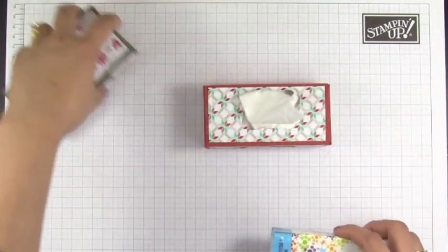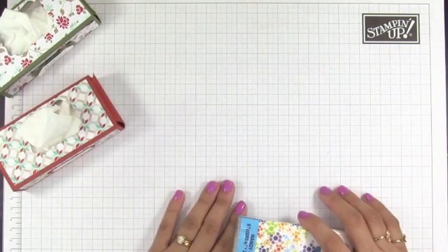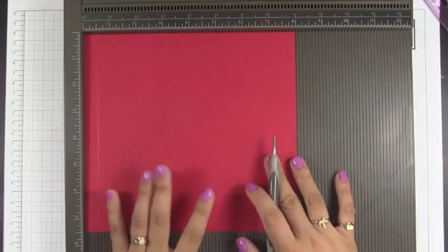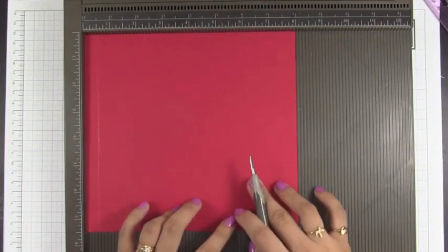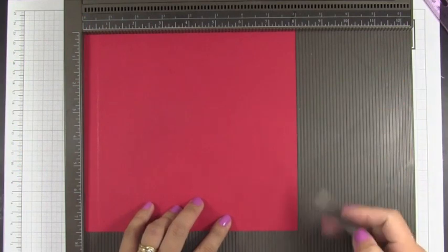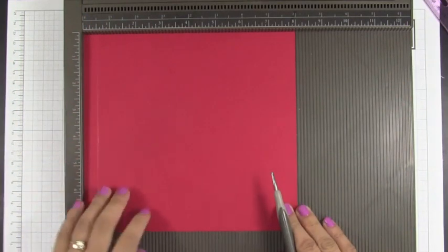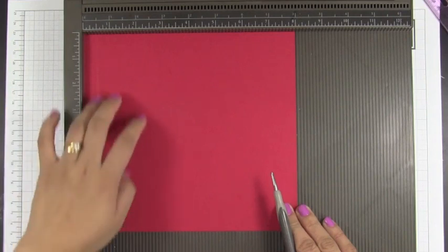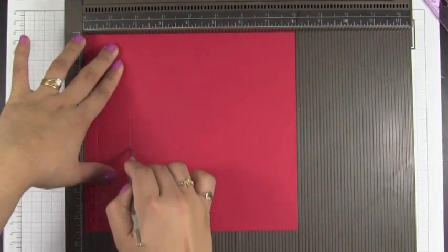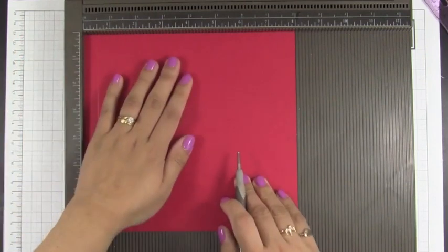So I'm just going to set this aside and we'll work on our project. You're going to need a piece of real red cardstock and this piece measures 8 inches by 7 and a half. On your 8 inch on the top, we're going to score this at half an inch, 1 and 3 quarters, 6 and a quarter inch, and 7 and a half.